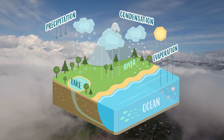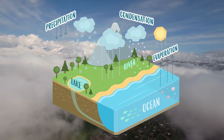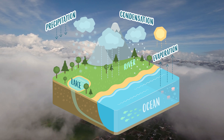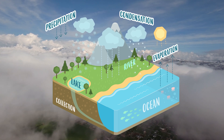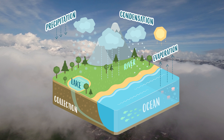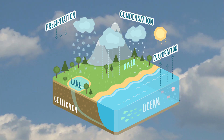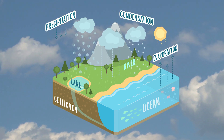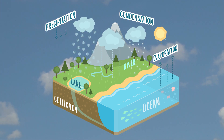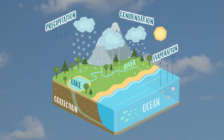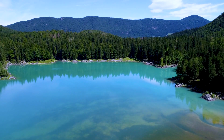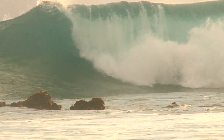After precipitation, we have the water cycle's last phase. Collection! Water comes back to the earth — it falls and it goes into rivers, lakes and seas.